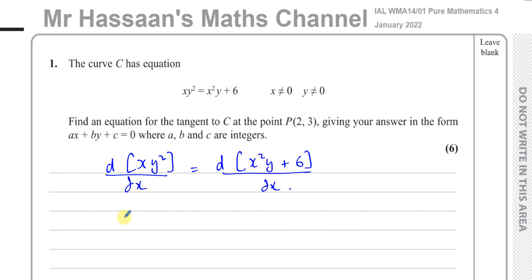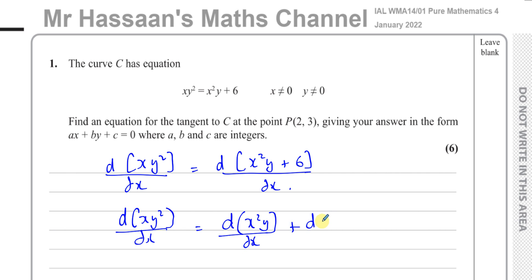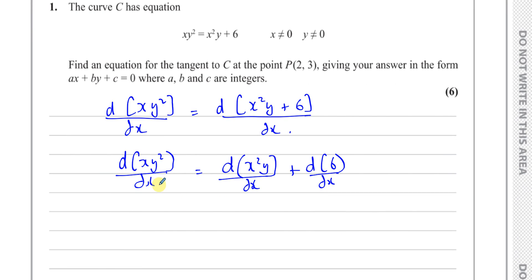So none of these intermediate steps actually need to be written down — we can go straight from here to the next line. This is just to give you an understanding of what's happening: we're differentiating both sides with respect to X. That's the first thing when we have implicit differentiation. The second thing is we want to differentiate this expression with respect to X. It's a product of two separate functions, so I'm going to call one of them U — U equals X — and the other one V, so V equals Y squared.